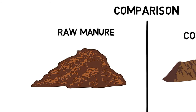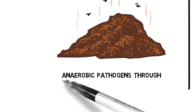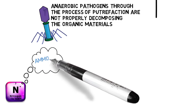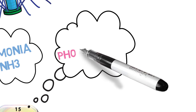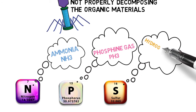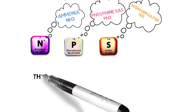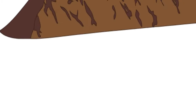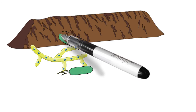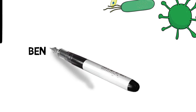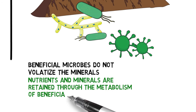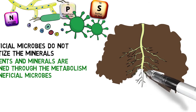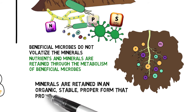Another major difference in raw manure is the odors that are created. Anaerobic pathogens through the process of putrefaction are not properly decomposing the organic materials — they volatilize nitrogen as ammonia, phosphate as phosphine gas which is extremely toxic, and hydrogen and sulfur as hydrogen sulfide. This is a dramatic loss of potential nutrients that should be retained for soil reserves, not released into the atmosphere. In a composting operation, beneficial microbes do not volatilize the minerals; they retain nitrogen, phosphorus, calcium, potassium, sulfur, and trace elements in an organic, stable, non-leachable form.